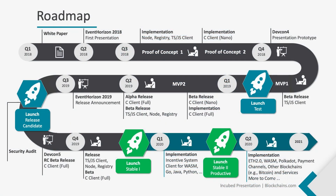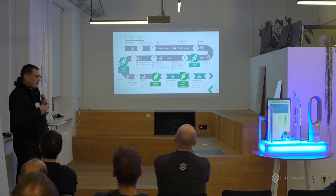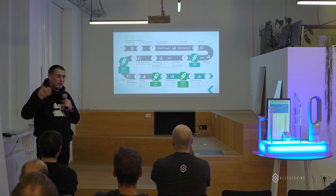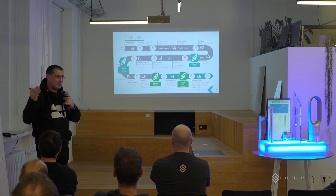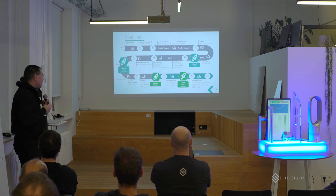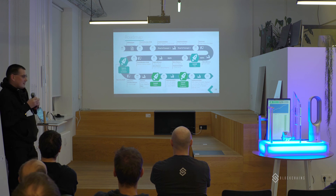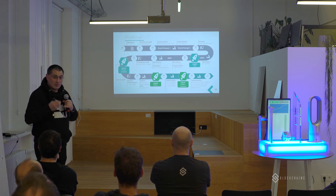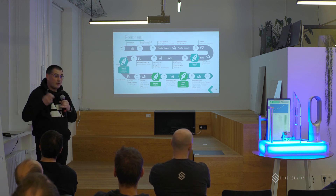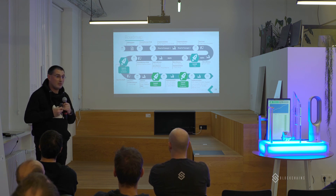The last slide is the roadmap. We are now at the beginning of 2020. We released the TypeScript version of the Incubed client as a stable release, and also the C version as a beta release. The full stable release of the C version will be within the next month. The next steps we are working on are the incentive system, which we want to finish within the next half year, and wrapper applications so that you can use it not only in C or TypeScript but also in Java, Go, Python, and other languages. We also have a WASM client which is already existing. We are also looking into ETH 2.0 development so that we can make our client ready for ETH 2 and include other technologies into the protocol.